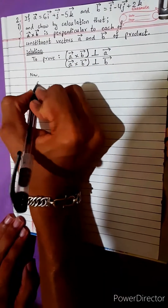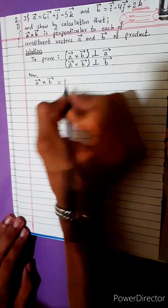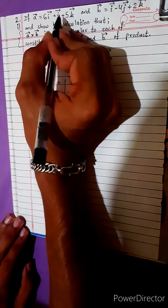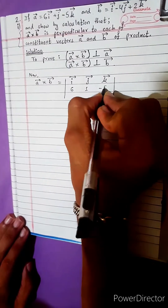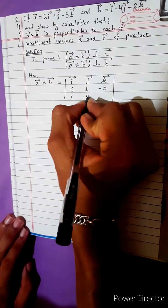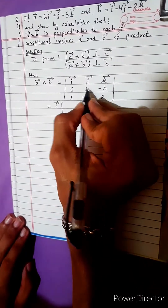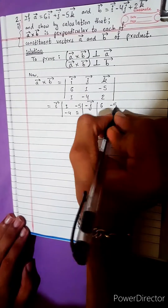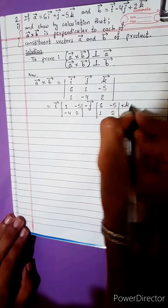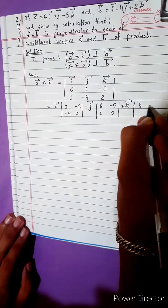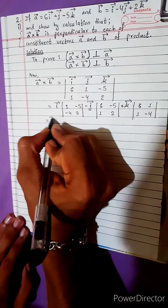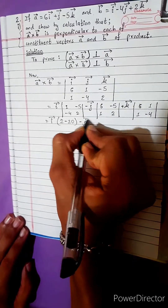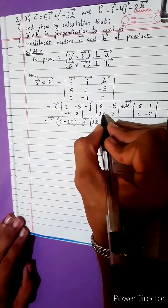Now, start. For a vector cross product b vector, we will get the formula using the determinant with i, j, k. I will write the components: 6, 1, -5 for vector a, and 1, -4, 2 for vector b.